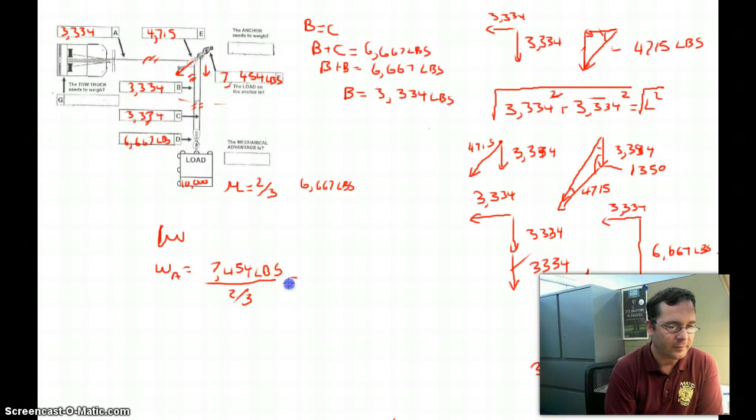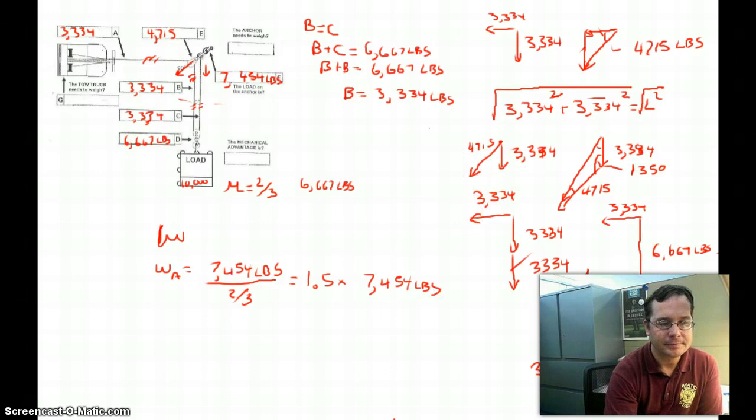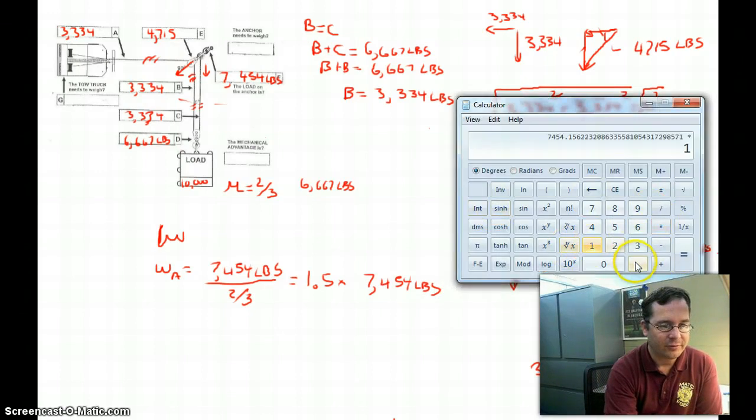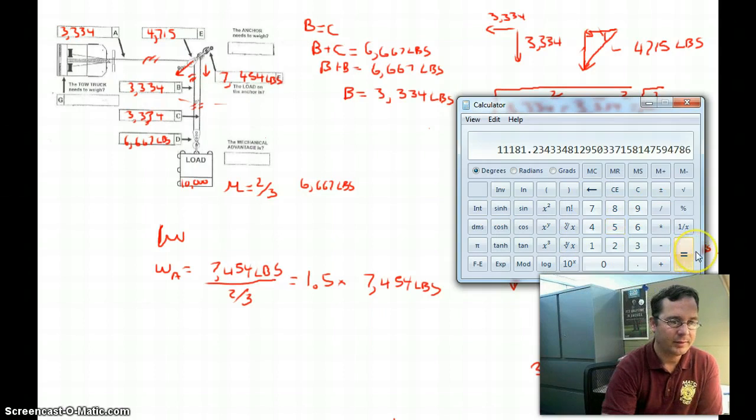That's not very pretty. But remember that dividing by a fraction is the same as multiplying by its reciprocal. So three-halves is the reciprocal of two-thirds, which is 1.5. So if we just do 1.5 times 7,454 pounds, we'll find out what that anchor needs to weigh. We're just going to multiply that number times 1.5. And it needs to weigh about 11,181 pounds.